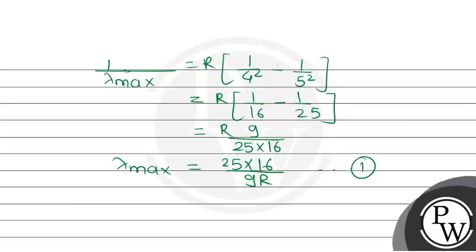This is one. Now lambda min. Lambda min equals 1 by lambda min equals R in bracket 1 by 4 square minus 1 by infinity square.